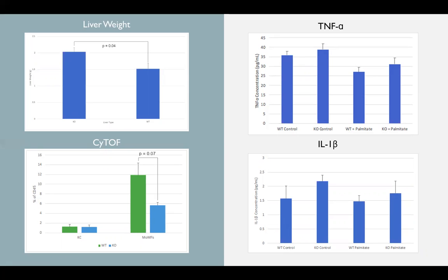Finally, we cultured liver macrophages in vitro with 400 micromolar palmitate and measured pro-inflammatory cytokine secretion after 24 hours by ELISA. In both control and palmitate-treated conditions, we observed a greater concentration of TNF-alpha and IL-1-beta secreted in knockout macrophages compared to wild-type, suggesting that the lack of FFAR4 contributes to a greater inflammatory response.